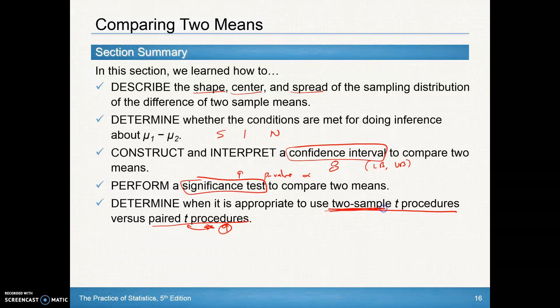Save this for two distinct different samples. Paired t procedures are reserved for before and after on the same subject when you're doing a matched pairs experimental design.